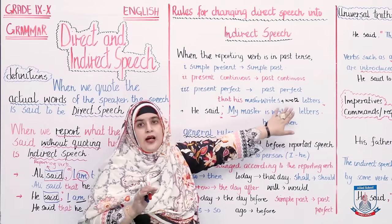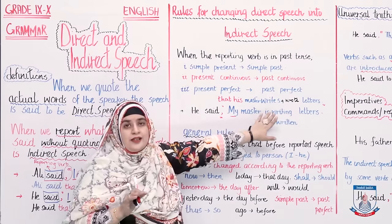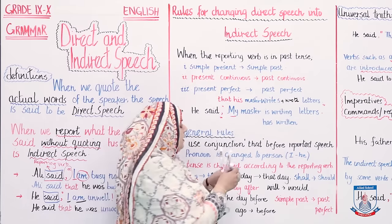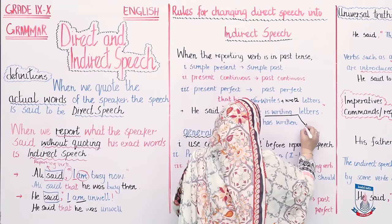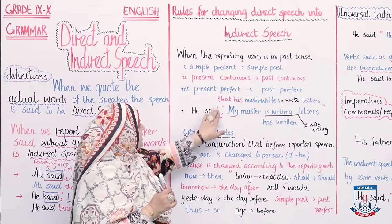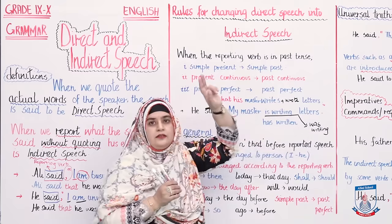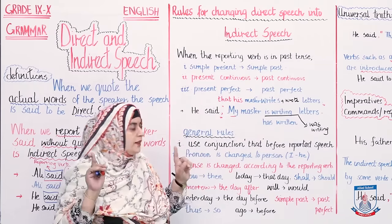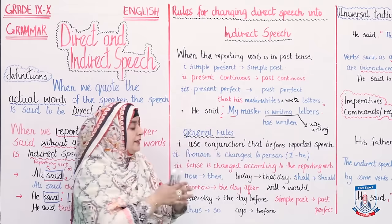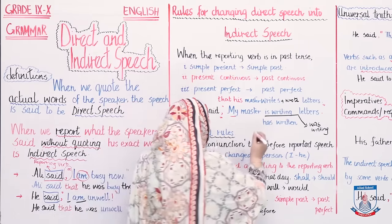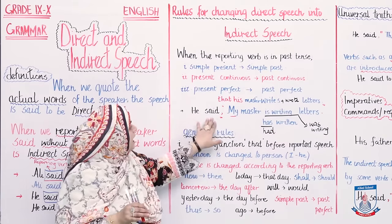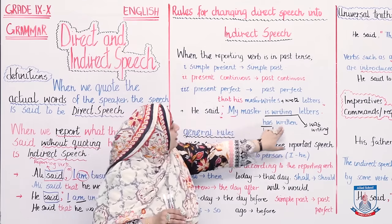If the direct speech is in present continuous — the identity of continuous is 'ing' with the verb — you convert it to past continuous. He said, 'My master is writing letters' → He said that his master was writing letters. Similarly, if inside the quotation marks you have present perfect — the identity is 'has' or 'have' — you convert it to past perfect using 'had'. He said, 'My master has written letters' → He said that his master had written letters.